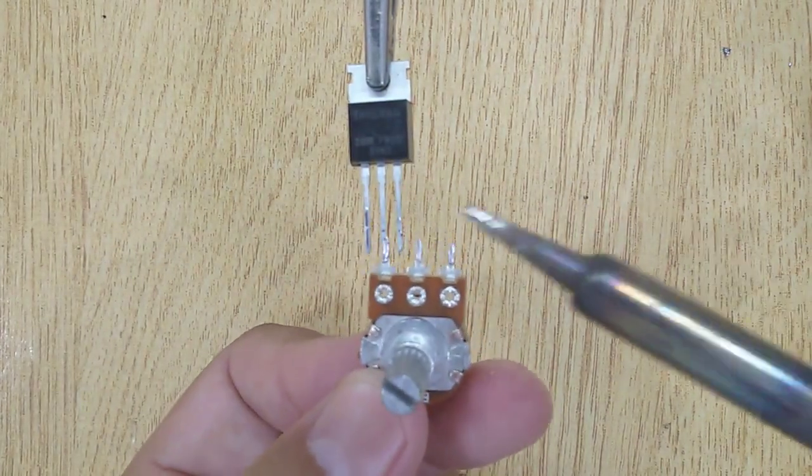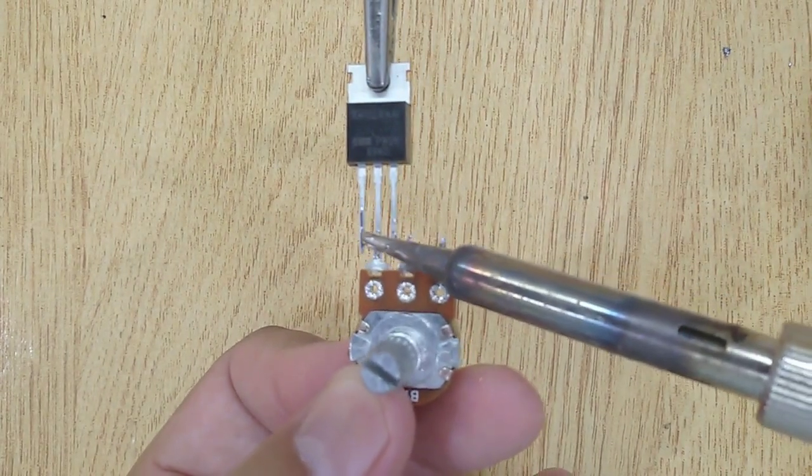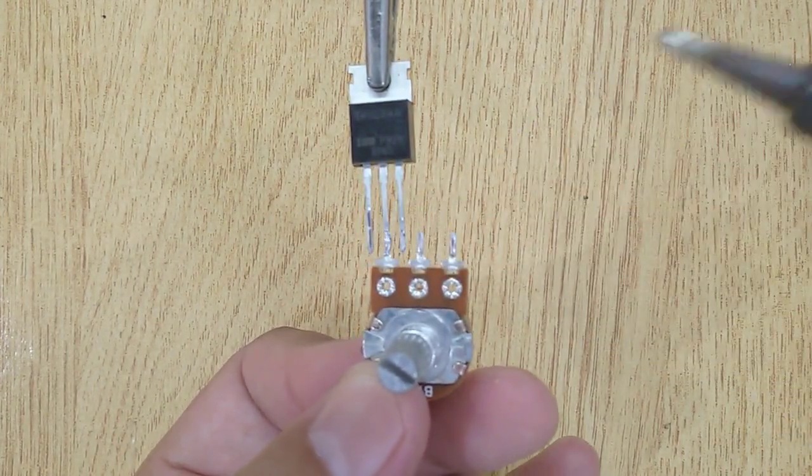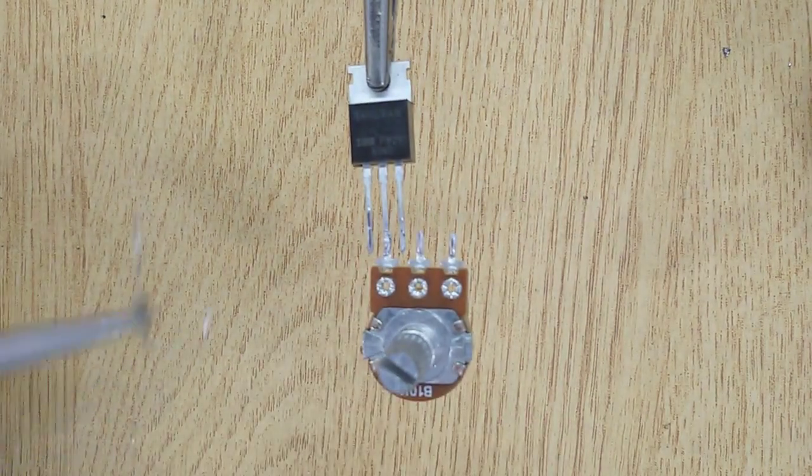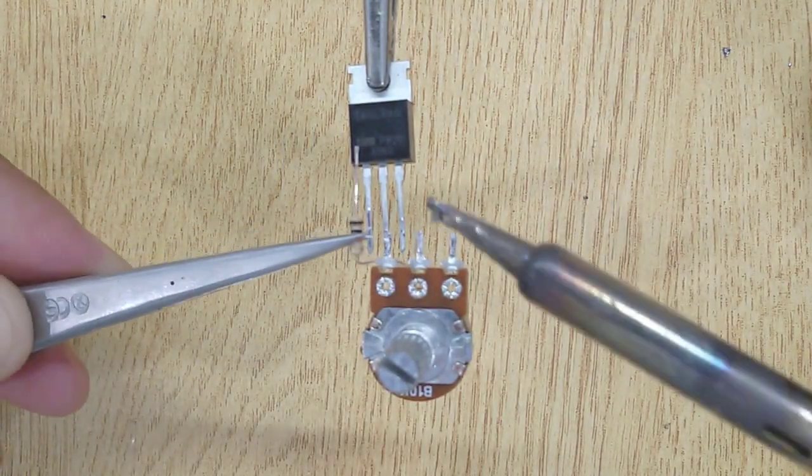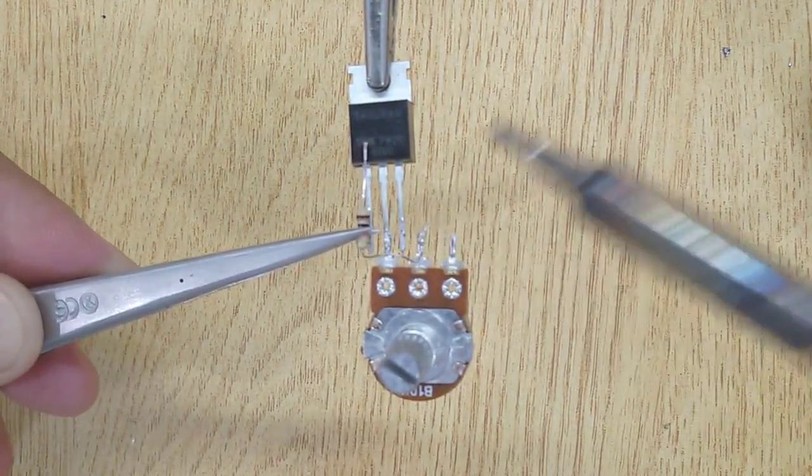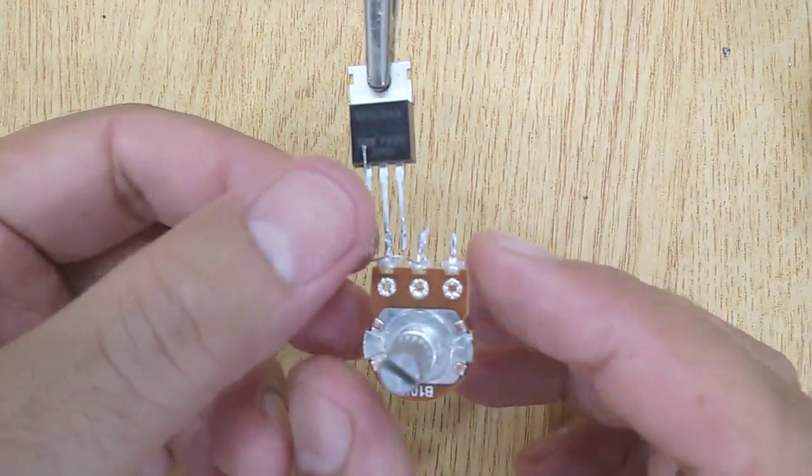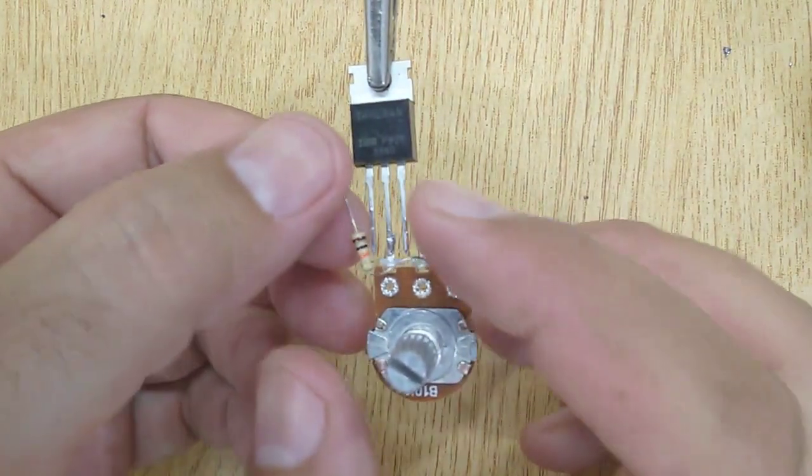Solder first pin of variable resistor to the drain pin of MOSFET. Solder 10K resistor with the second pin of the variable resistor and then solder it to the drain pin of MOSFET.